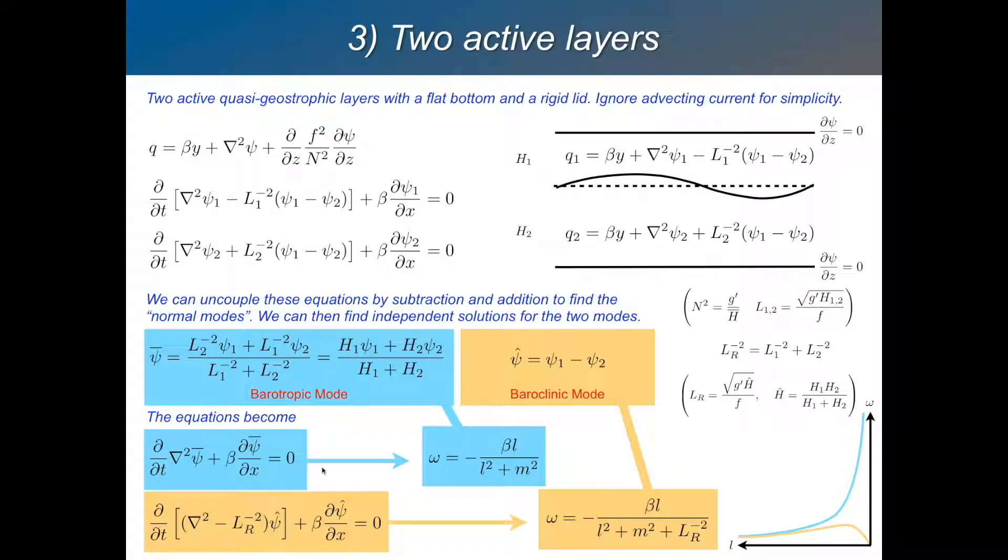So these two modes are associated with these two dispersion relations, the first of which, depending on the shape of the wave, will have variable dispersion relation between this extreme and something where you can have some non-dispersive barotropic waves.